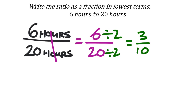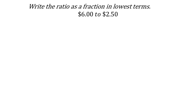So 3 to 10, or three-tenths as a fraction, is our final answer. As a reminder, your calculator can do this — just remember that 6 is our numerator and 20 is our denominator. Push 6, then the n-over-d fraction button, put it over 20, push Enter, and it simplifies the answer for us.